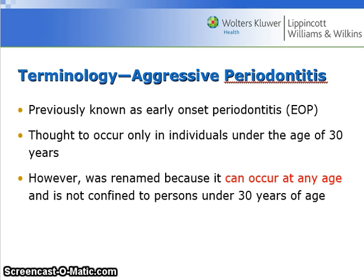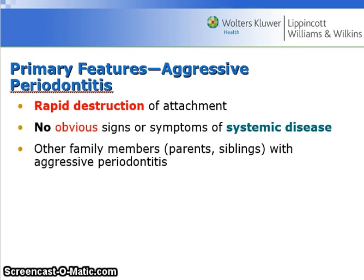Aggressive periodontitis was previously known as early onset periodontitis and was thought to occur only in individuals under the age of 30. However, it was renamed because it can occur at any age. The primary features include rapid destruction of attachment and no obvious signs or symptoms of systemic disease. Other family members, such as parents or siblings, may also have aggressive periodontitis.